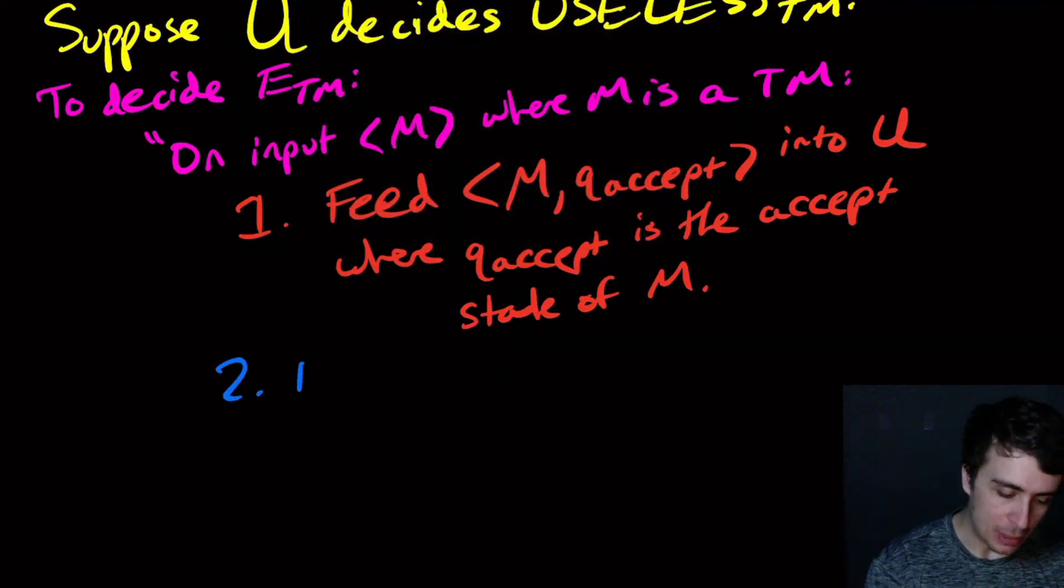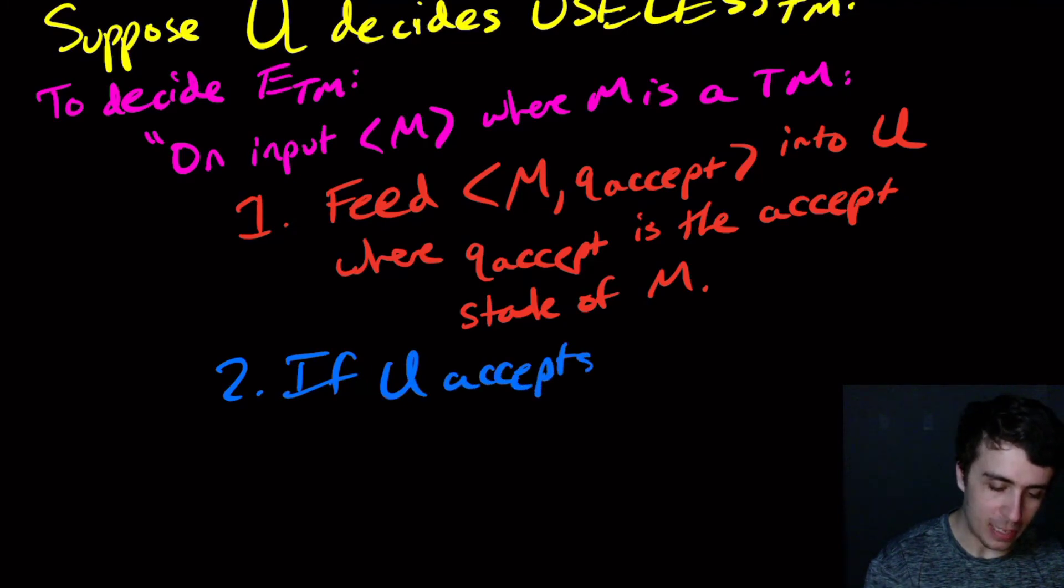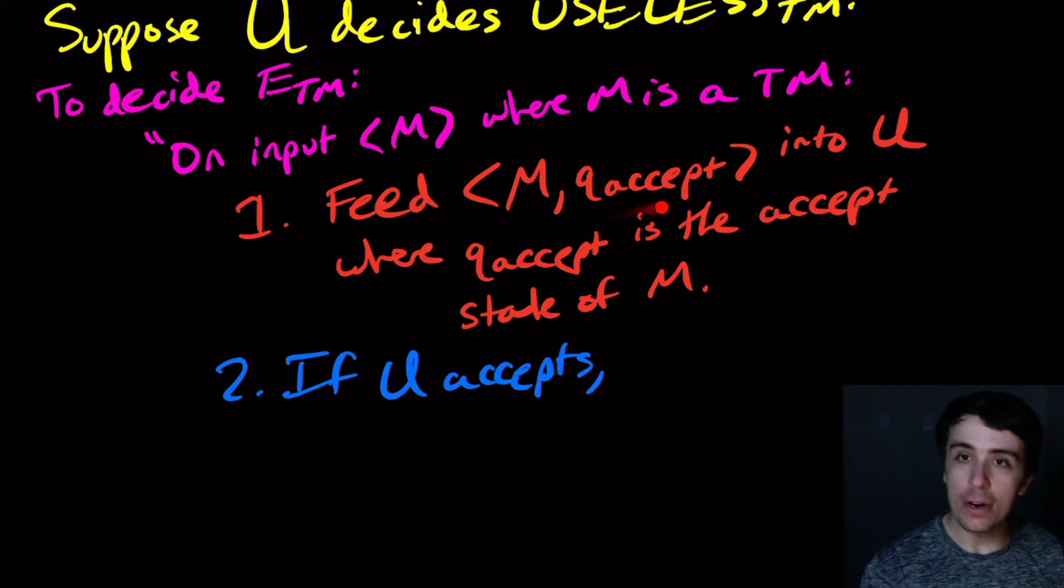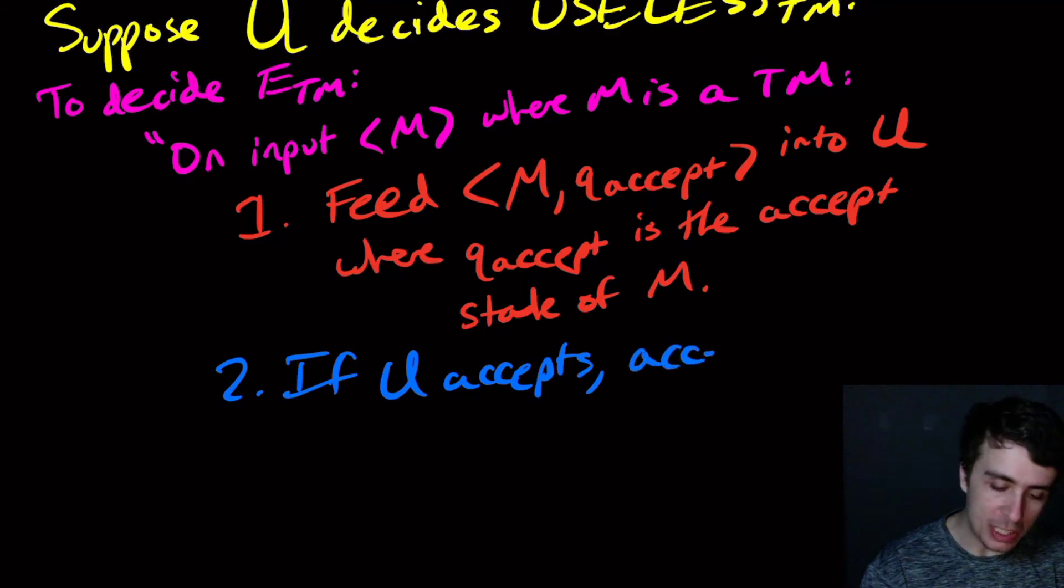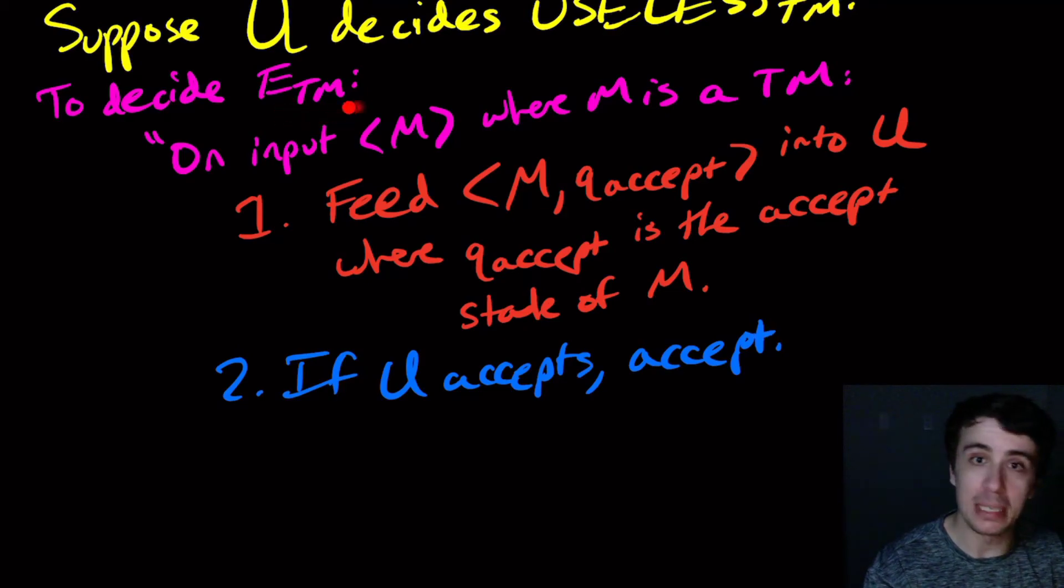Let's actually figure out what happens. If U accepts, which is a funny English sentence, if U says yeah, M never enters this accept state ever, well then that implies that the language of M is empty because it never hits the accept state on anything. Therefore we need to say accept here because we're trying to solve the emptiness question. If U accepts, then that means that the language of M is empty, which is what we're trying to decide in the first place.